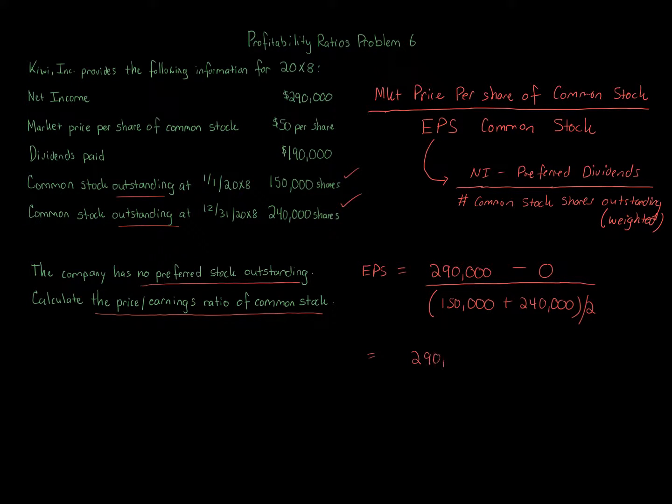And we're gonna get a numerator of $290,000, denominator is going to be 195,000, and that gives us an earnings per share of $1.49 – one dollar and 49 cents per share.